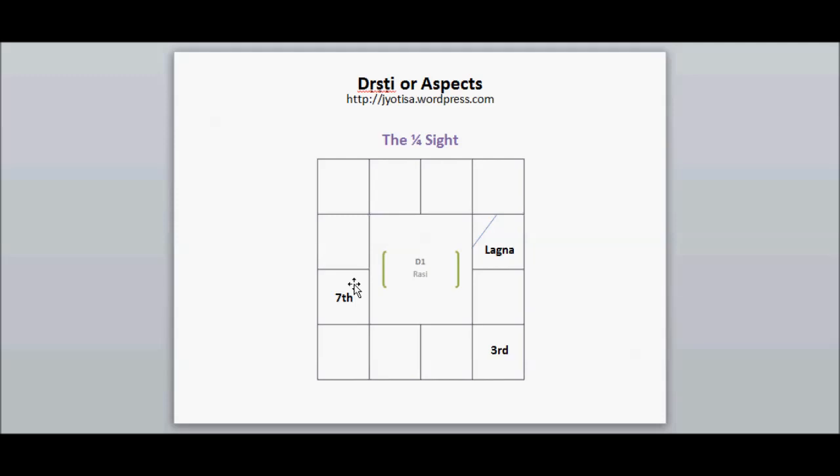So a quarter of a sight for all grahas. Any grahas, take for example, let's say Saturn. Saturn does a quarter Dhrishti or aspect on the third and the seventh house.